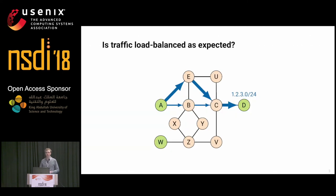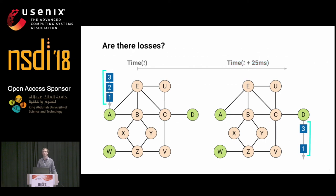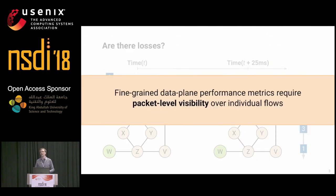Once you know the path, you may want to know the performance of it. If there are multiple paths, are they load balanced properly, or is there congestion? For a set of packets entering your network, how long will they take to reach your customer? Is it acceptable? Is it stable over time? Are there losses — of three packets entering the network, how many actually reach the customer network? These are questions requiring packet-level visibility over specific flows of interest.